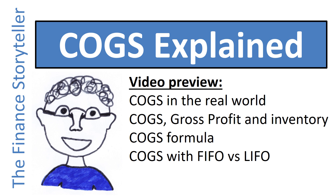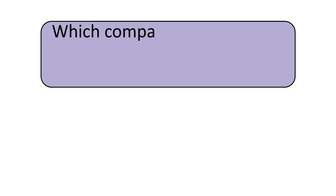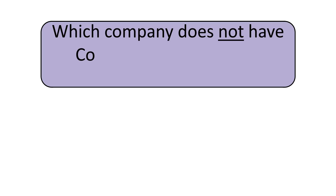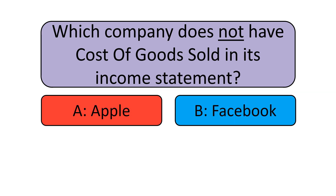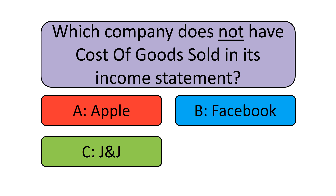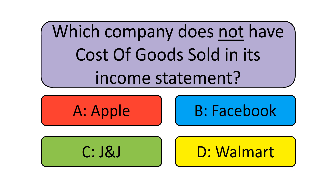Let's warm up with a short quiz question. Which of the following companies does not have COGS in its income statement? Apple, Facebook, Johnson & Johnson, or Walmart? Please vote now, and then let's review how COGS works for those companies that have it.